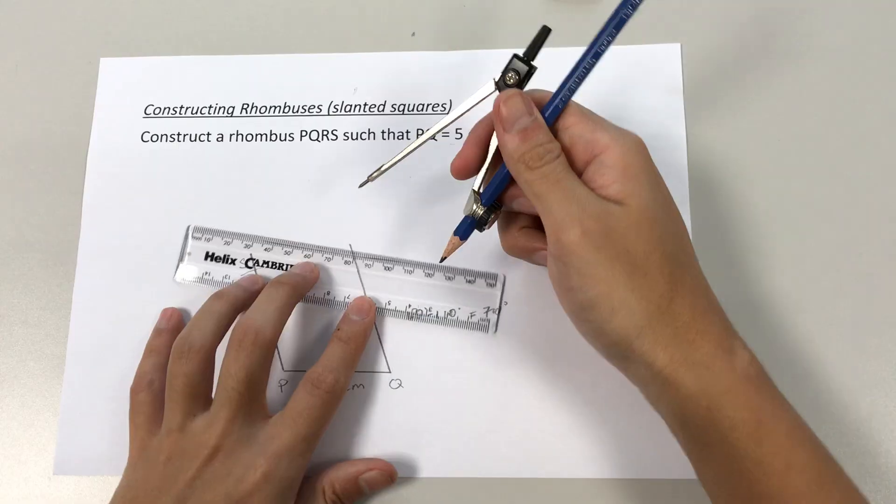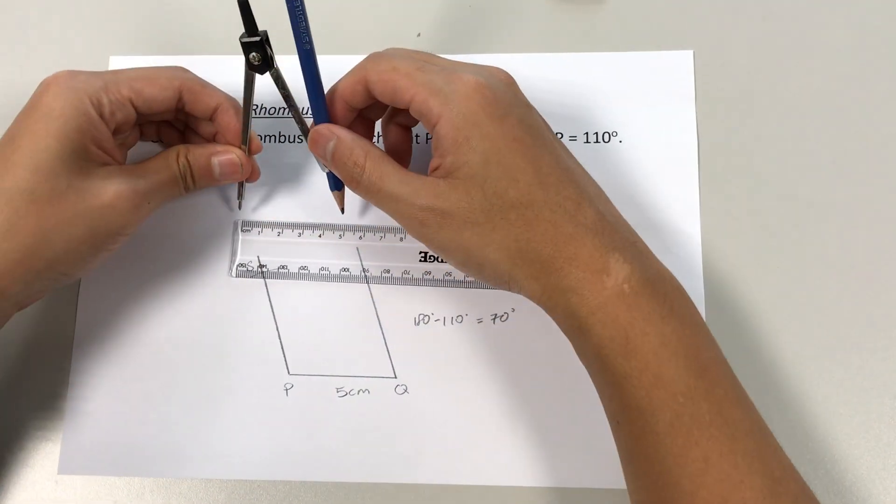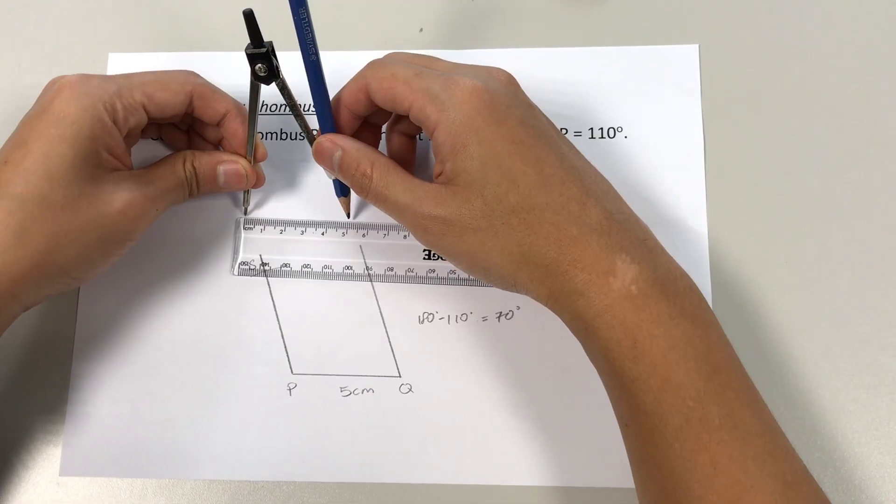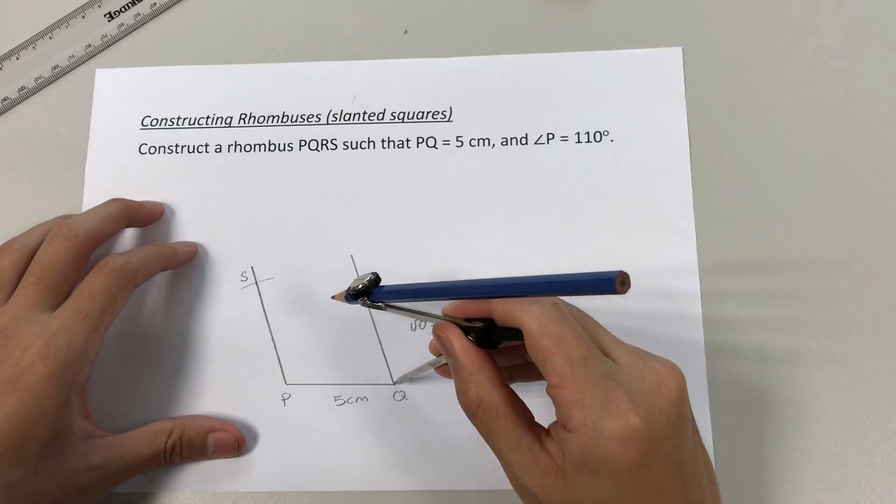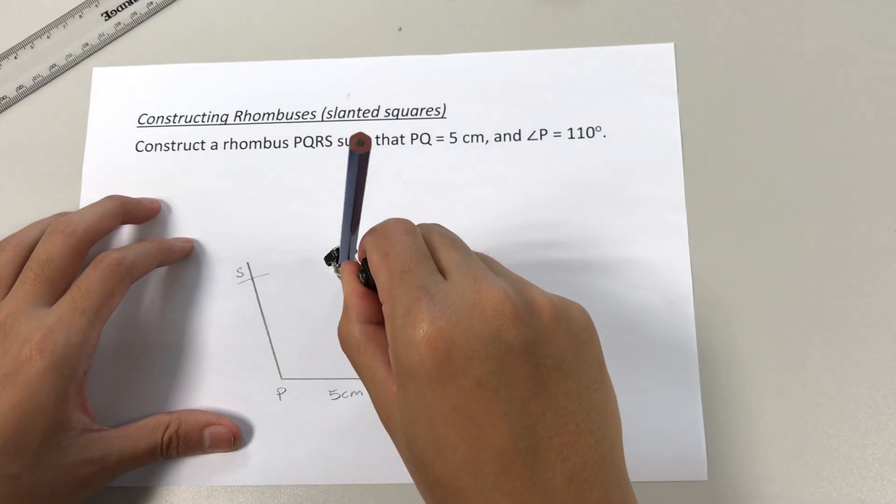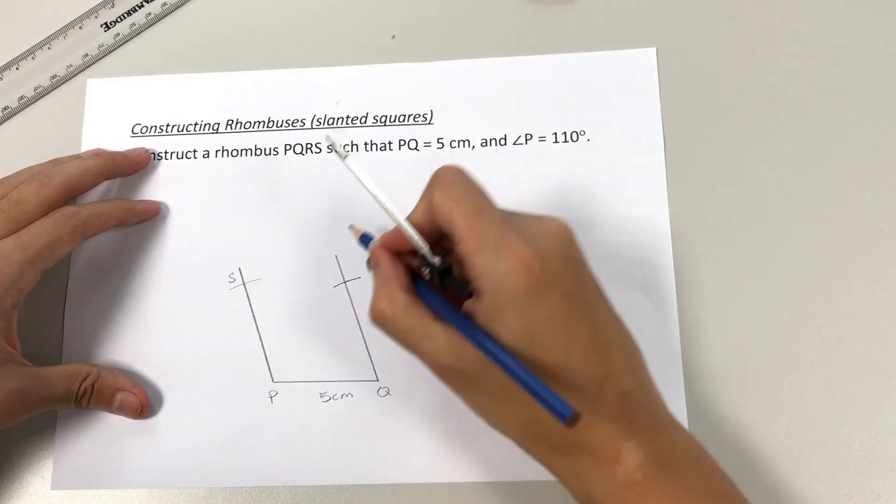Now, if we have not moved our compass, it should still be 5cm wide. But we shall check it. Yes, it's still 5cm. Put the needle at Q. Mark out a point. This will be point R.